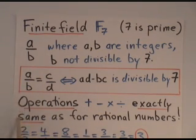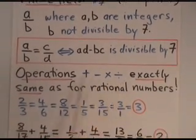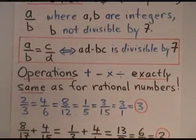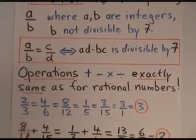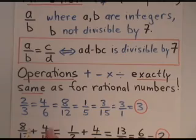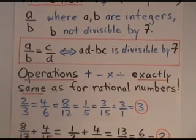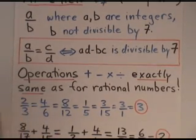The operations on such quotients is, by definition, exactly the same as it is for rational numbers. So, we'll use exactly the same laws in defining addition, subtraction, multiplication, and division for these F7 numbers.